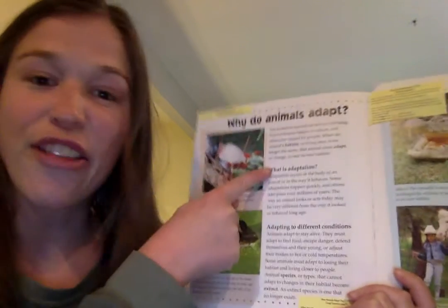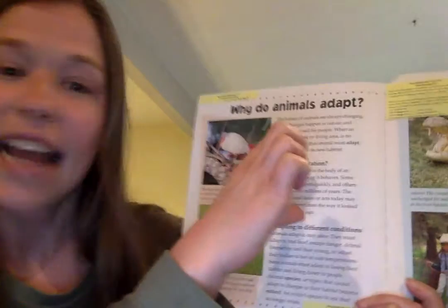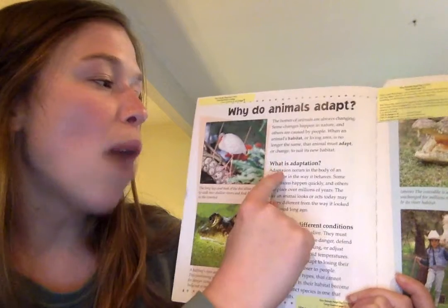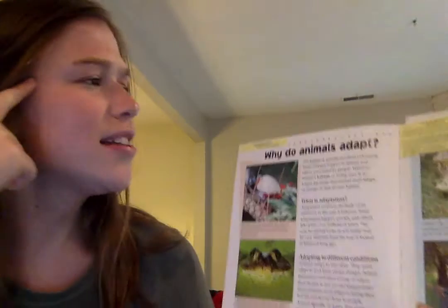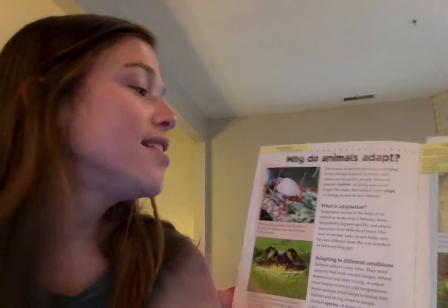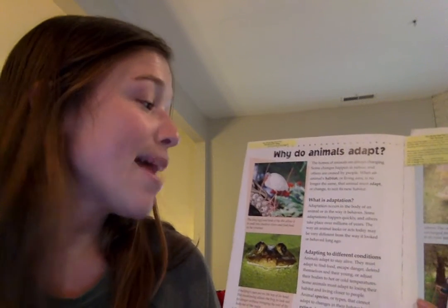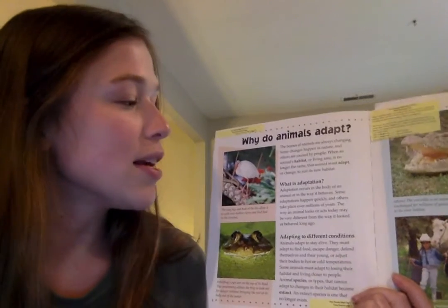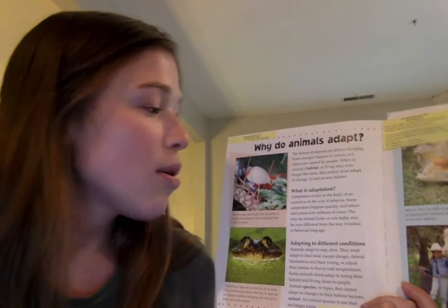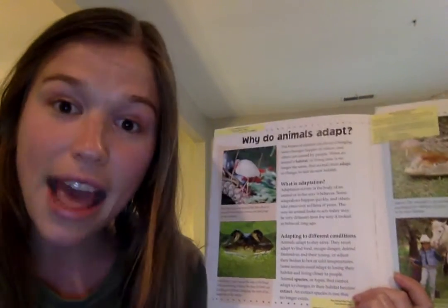Now we have another bold text telling us about the next section: "What is adaptation?" What do you think adaptation is? Let's read to find out. Adaptation occurs in the body of an animal or in the way it behaves. Some adaptations happen quickly and others take place over millions of years. The way an animal looks or acts today might be very different from the way it looked or behaved long ago.